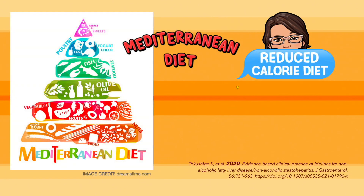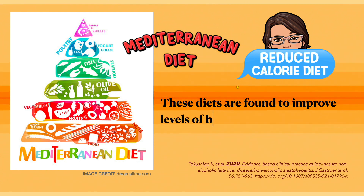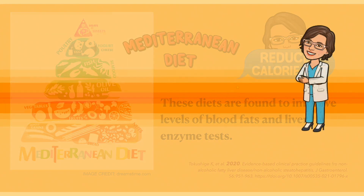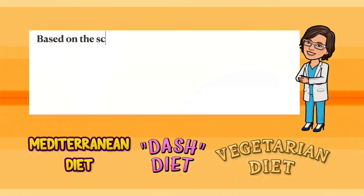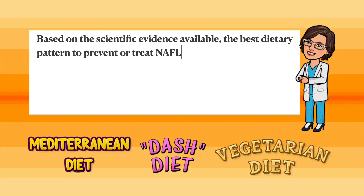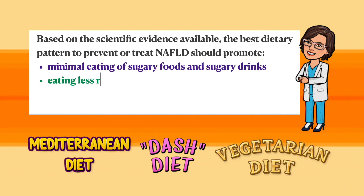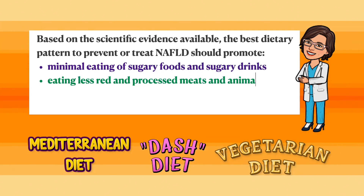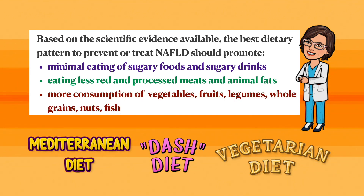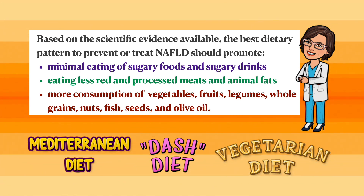The Mediterranean diet and reduced-calorie diets are found to improve levels of blood fats and liver enzyme tests. Based on the scientific evidence available, the best dietary pattern to prevent or treat NAFLD should promote: 1. minimal eating of sugary foods and drinks; 2. eating less red and processed meats and animal fats; 3. more consumption of vegetables, fruits, legumes, whole grains, nuts, fish, seeds, and olive oil.